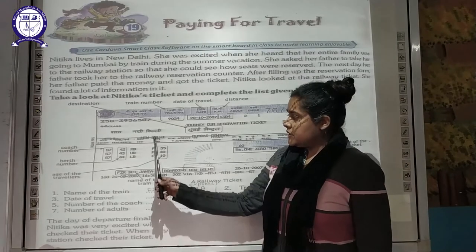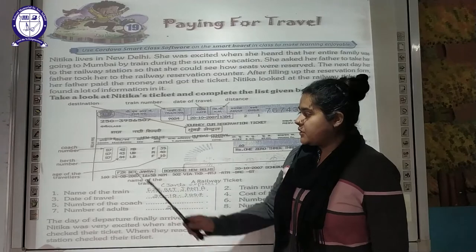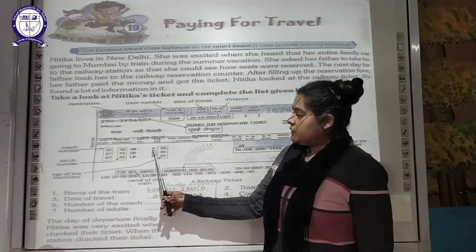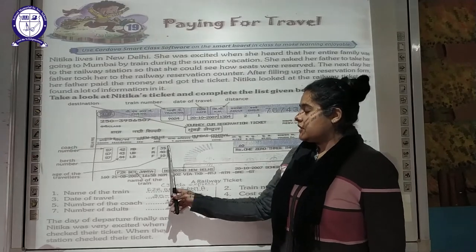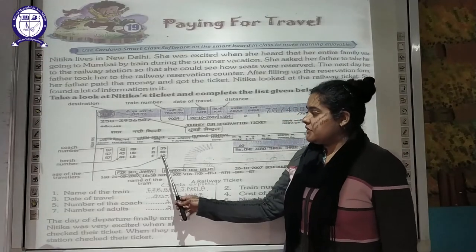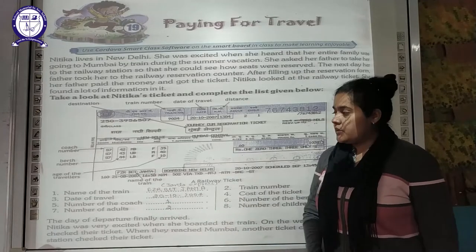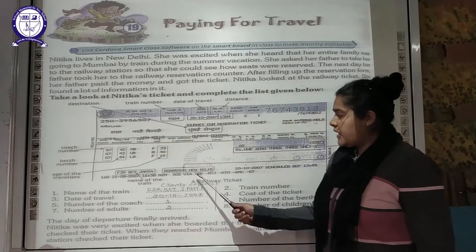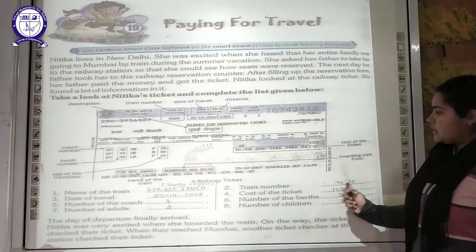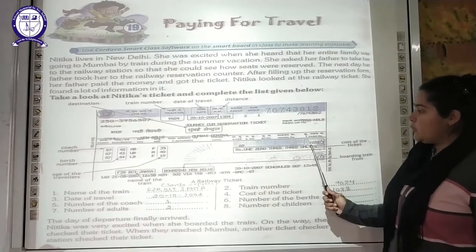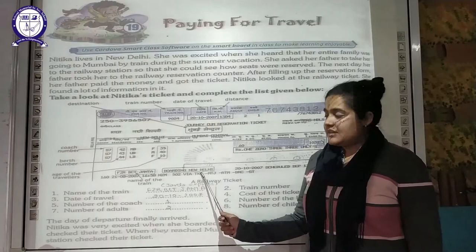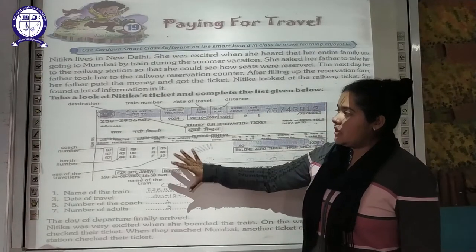Whether the traveller is male or female is depicted here, along with their ages. The female who is 35 years old is Nitika's mother, the male is 40 years, and the female aged 10 is Nitika herself. The name of this train is Janta Express, the boarding station is New Delhi, the scheduled departure time is mentioned, and the cost of the ticket shown on the right-hand side is 1033 rupees.